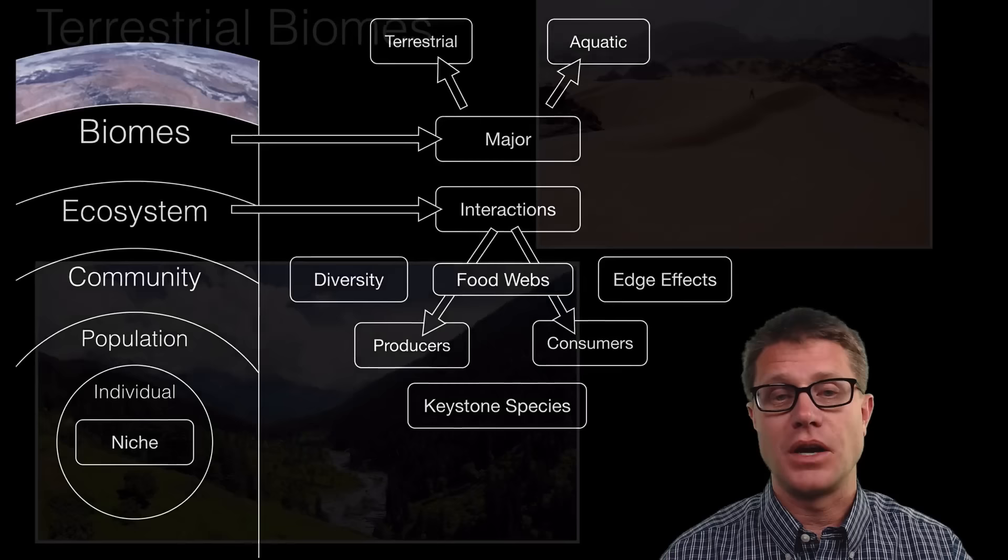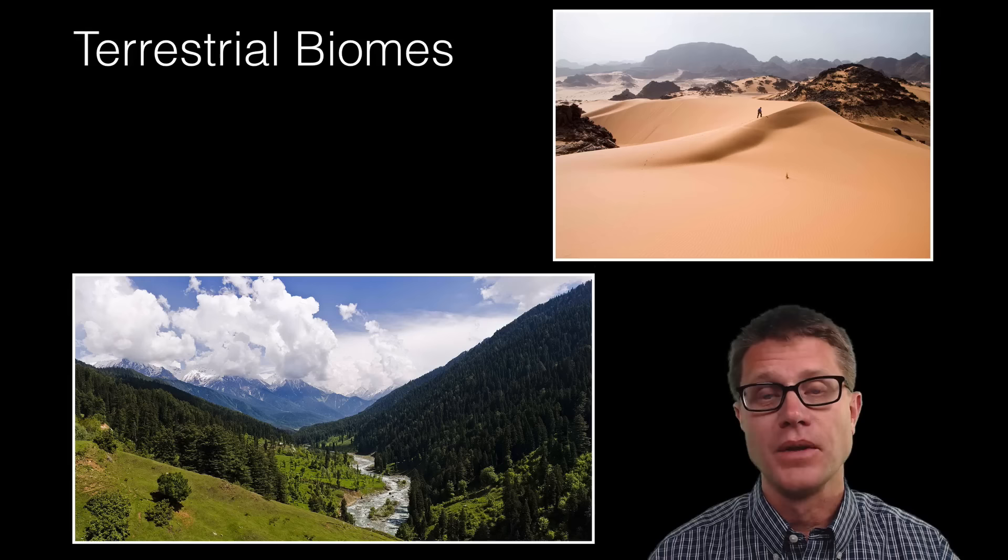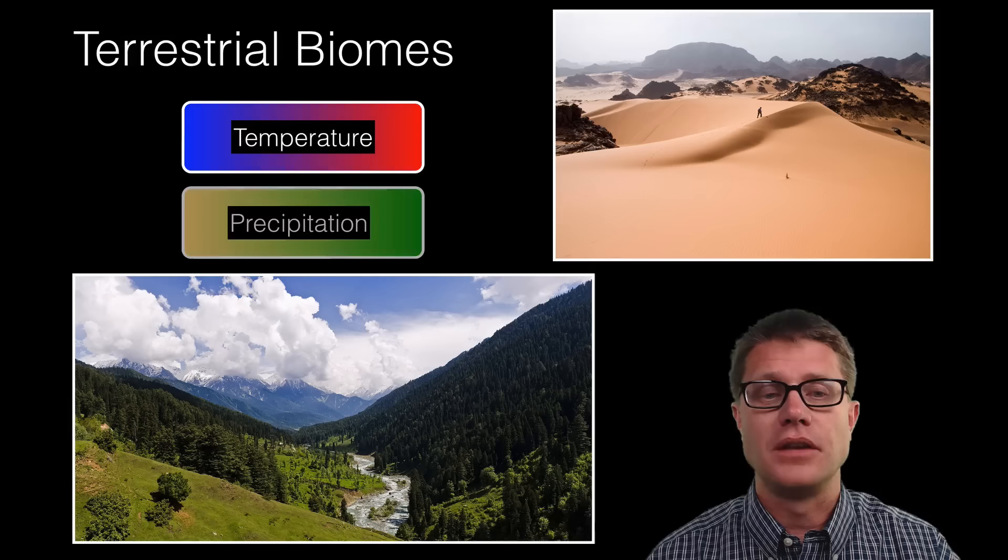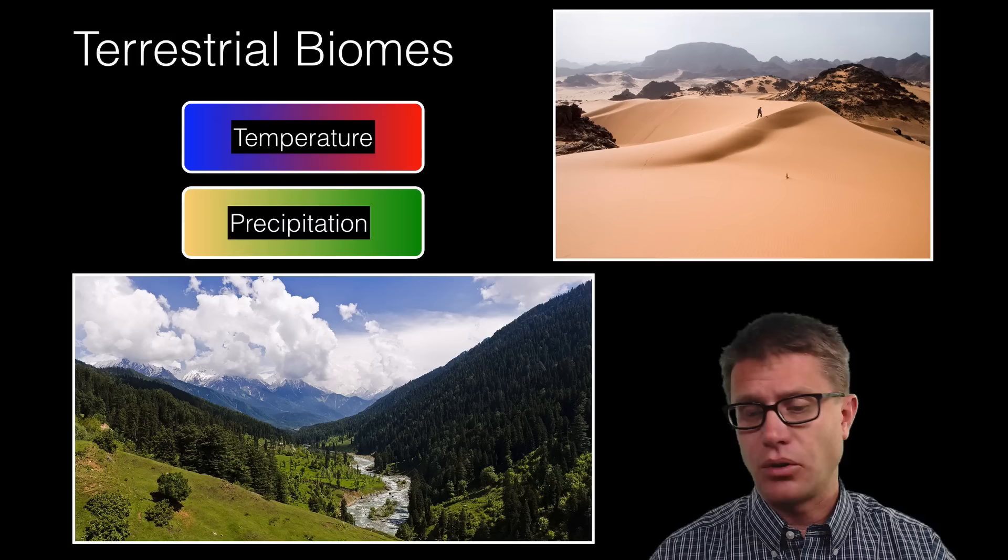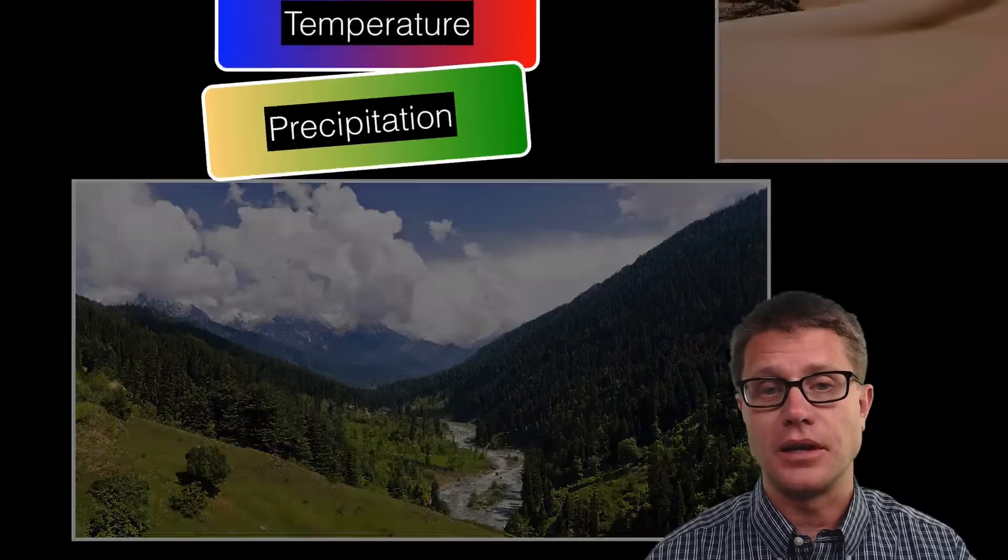Let us start with terrestrial biomes. A desert could be an example, or a boreal forest. There is really only two properties that determine what biome we are going to have. That is going to be the temperature, average temperature and the average precipitation. So you could be given a map and just told what is the average temperature and precipitation. You could make a pretty good guess as to what the biome is going to look like.